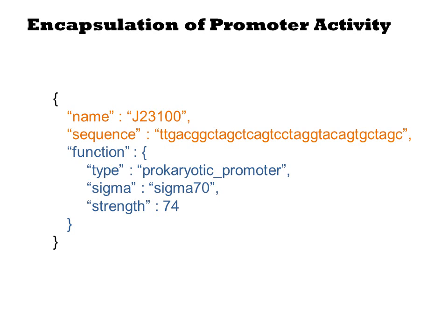The name and sequence of the part is shown in orange, and an object describing its function is shown in blue. We are stating that the promoter is for use in prokaryotes, so all bets are off if you try to put this in eukaryotes, that it relies on sigma-70, and its strength is 74. This model of a promoter will be sufficient for the way it is conceived in this paper about RPUs, but let's first point out some of the limitations of it.